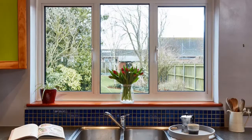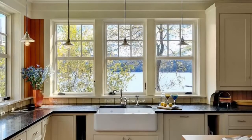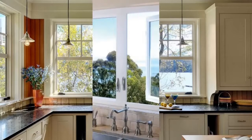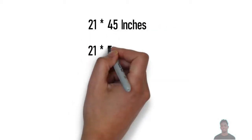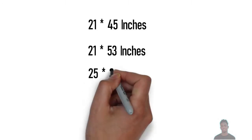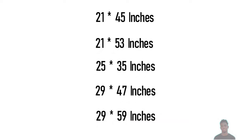Most kitchen windows are casement windows, although depending on when the home was built they could still be single-hung or double-hung windows. Kitchen window size is determined by the size of the kitchen and the need for natural light. Many homes have larger custom casement kitchen windows that are not considered standard. Standard kitchen window sizes include: 21x45 inches, 21x53 inches, 25x35 inches, 29x47 inches, and 29x59 inches.